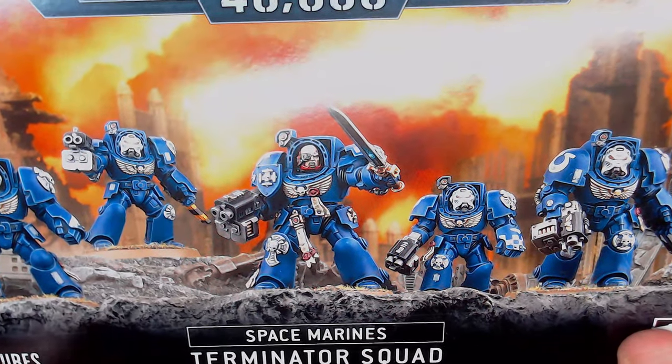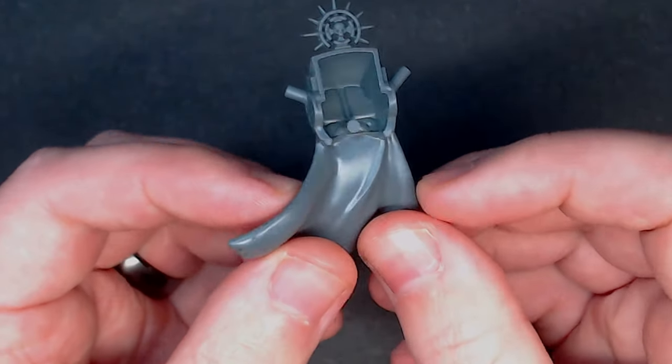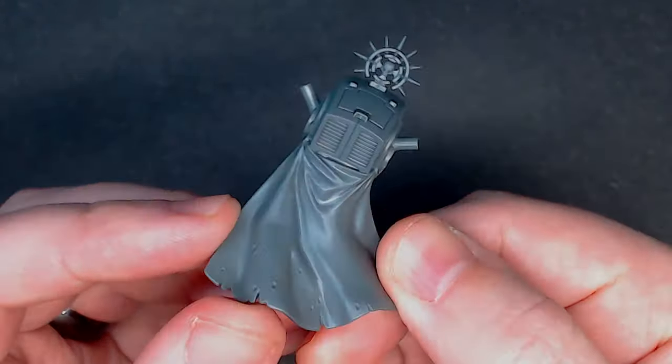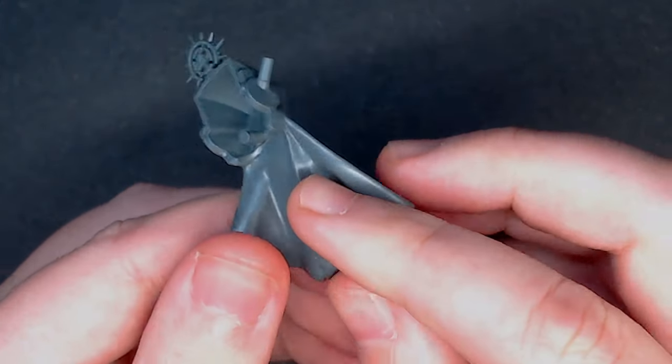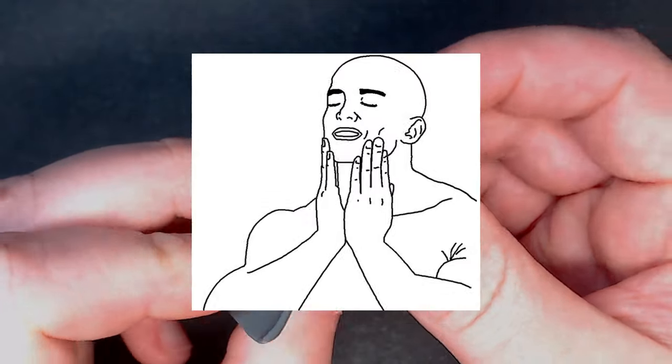However if you know me by now you know that I want to do things a little different. With that being said I started off with the Terminator Captain as I wanted to keep hold of the cloak. And from the Terminator kit I used one of the front chest pieces and it fits super snugly which was extremely satisfying.